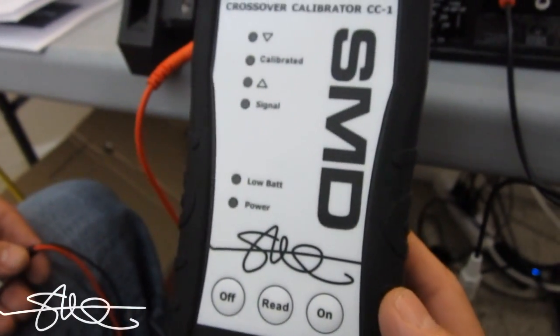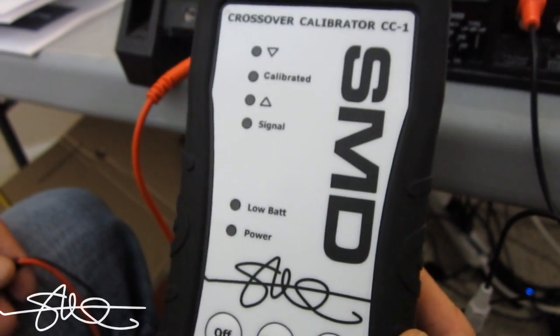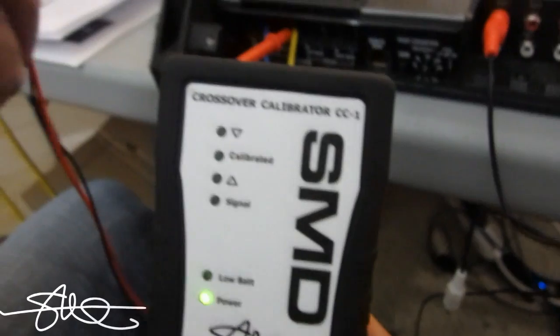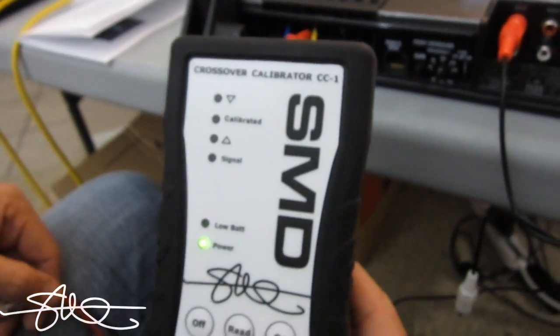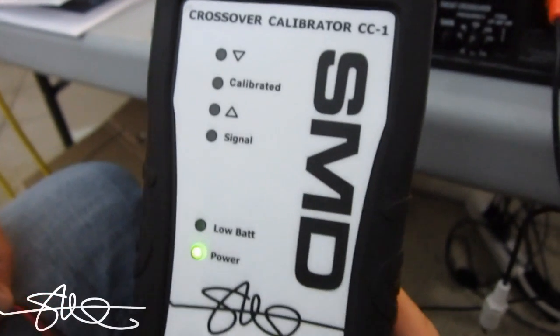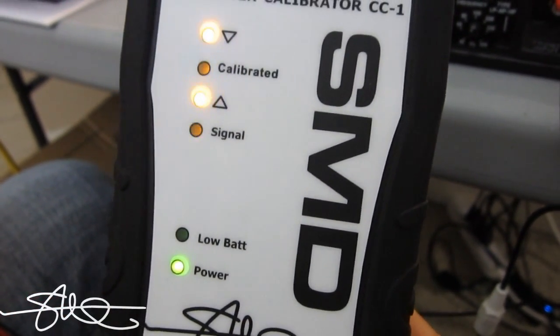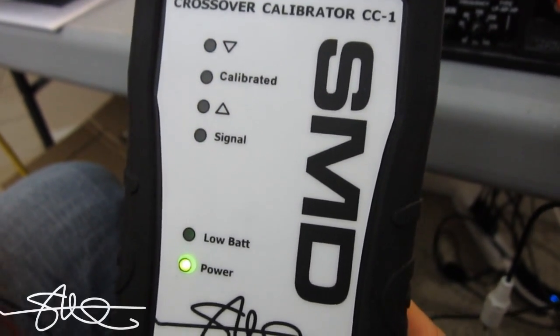But we're going to do it with the CC1. And then verify it on the audio precision to see how accurate it is. So let me turn it on. To get in the special mode you can't have this plugged in. It has to be off of the unit. And then you push and hold the read button for 3 seconds. Maybe 5. And then you get this little light show that comes on. That tells you we're in the special mode now. Gain matching mode.